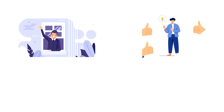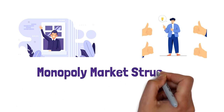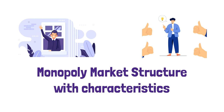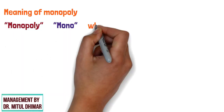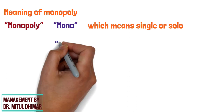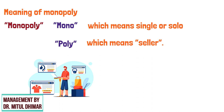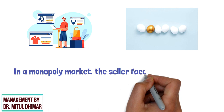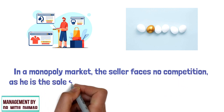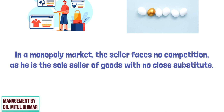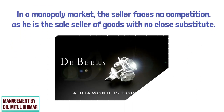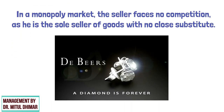Hello friends, today we are going to understand monopoly market structure with characteristics in detail with different examples. Let us start with the meaning of monopoly. If you break up the word monopoly, you get mono which means single or solo, and poly which means seller. A market structure characterized by a single seller selling a unique product in the market. In a monopoly market, the seller faces no competition as he is the sole seller of goods with no close substitute. For example, De Beers is known to have a monopoly in the diamond industry.